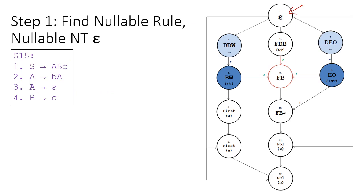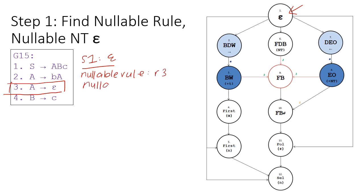The first step is to find the nullable rule. Nullable rules, just as we established in quasi-simple grammar, are rules that are derived to epsilon. Looking at grammar 15, we notice that grammar rule 3 is derived to epsilon. Therefore, the nullable rule is rule 3, and the nullable non-terminal is A, because A is the non-terminal on the left-hand side of rule 3.